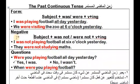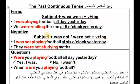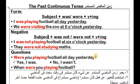Negative — في حالة النفي: Wasn't/Weren't + Verb + ING. I wasn't playing football at six o'clock yesterday — ما كنتش بلعب كرة الساعة ستة بالأمس. They were not studying Math — ما كانوش بيذاكروا رياضة. في حالة السؤال بنقدم Was/Were على الفاعل: Were you playing football all day yesterday? Yes, I was. No, I wasn't. When were you playing football?